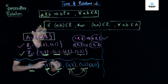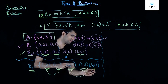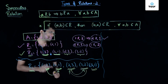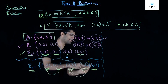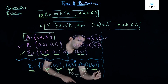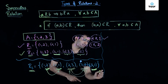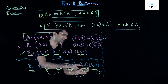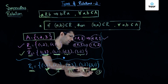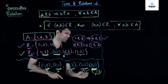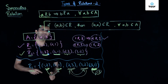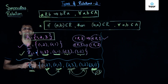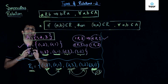However, when we check the next ordered pair with coordinates 3 and 1, we find that (3, 1) is present but (1, 3) is missing. Because (1, 3) is missing, (3, 1) cannot imply (1, 3). Therefore, we say that relation R3 is not a symmetric relation on set A.